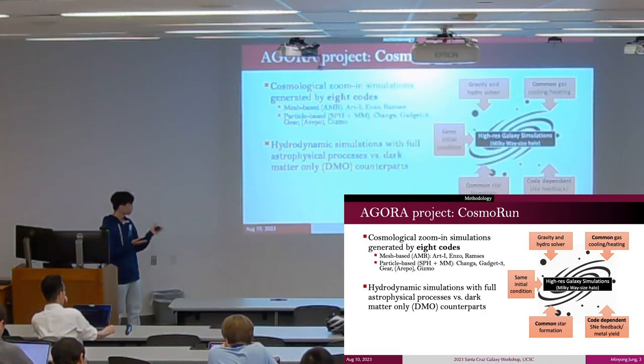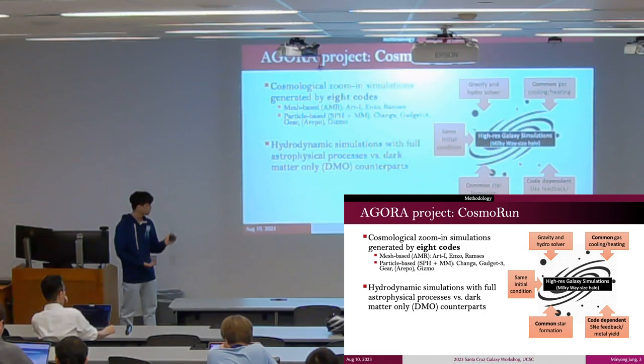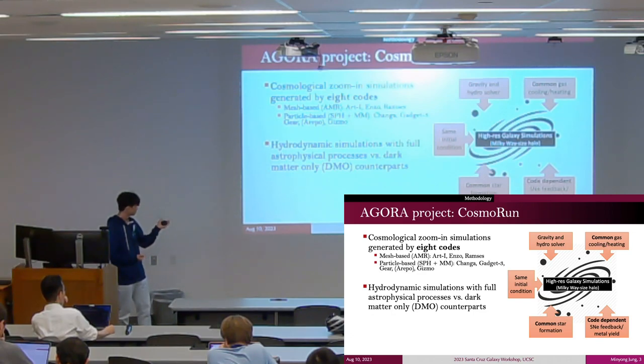Most importantly, we use code-dependent stellar feedback and metal yielding schemes, but ensure that they have similar star formation history in the main target galaxies.